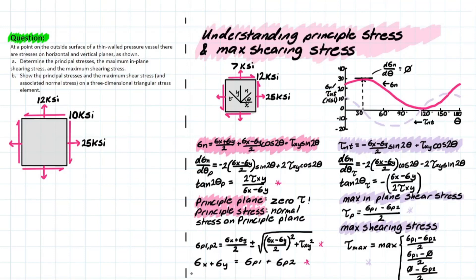An important relationship for solving problems: sigma_x plus sigma_y should equal sigma_p1 plus sigma_p2, implying no additional stresses are generated from the original stresses. Also, the max values differ by 180 degrees, but since we have 2θ_p in the equation, there will be a 90-degree difference between the theta_p values for your principal stress planes.